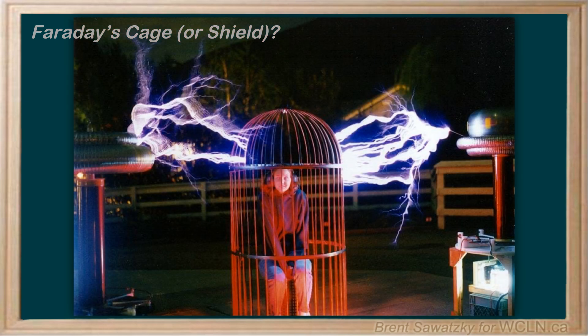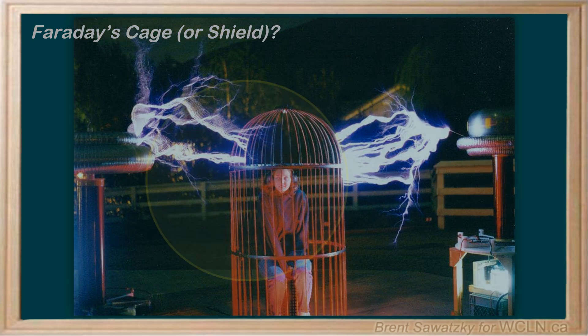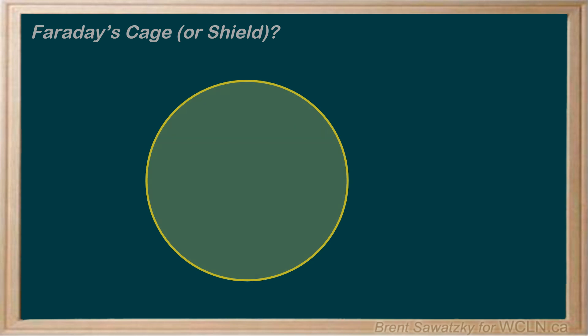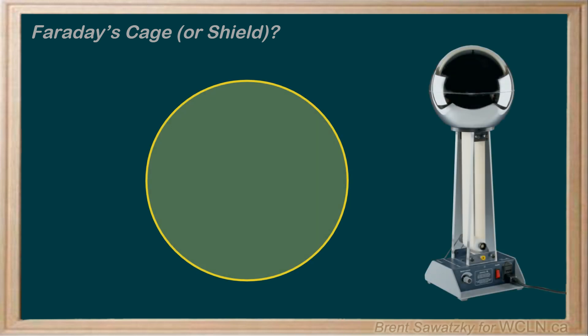In this tutorial, we'll bring together a few ideas around charge distribution and electric fields, all within a conductor. And this will lead us to the understanding and applications of a Faraday's cage. Here's a charged sphere, like a Van de Graaff generator — simply a sphere that's made up of a conductive material.